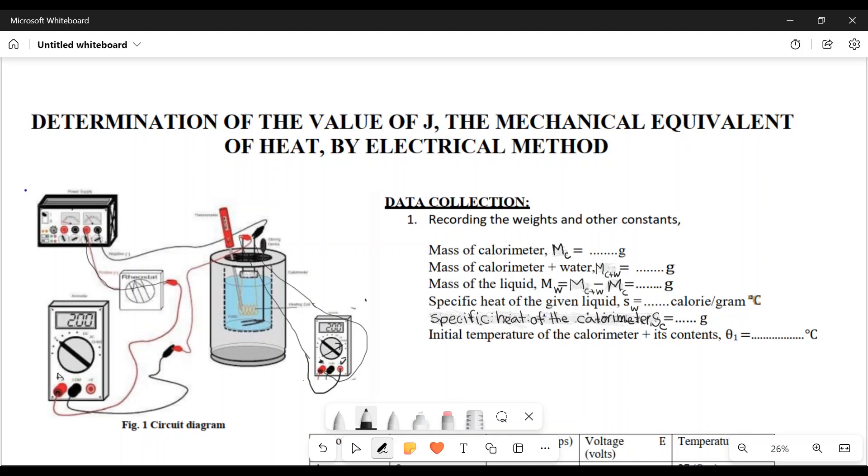If we can see how we perform this experiment or how we record the data. The mass of the calorimeter is measured. The calorimeter is in the box and there is a small part in the box.